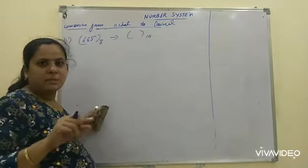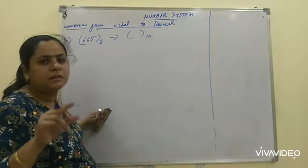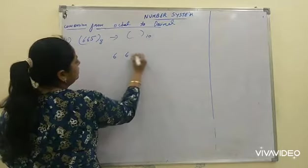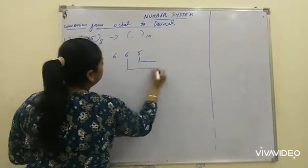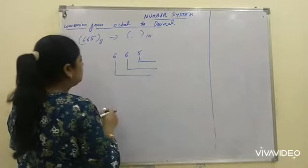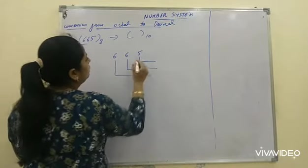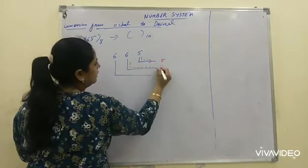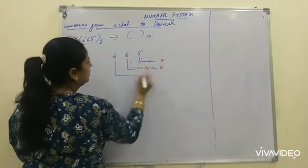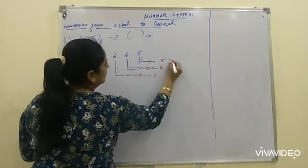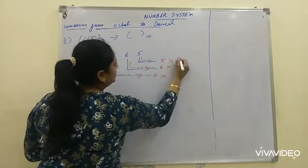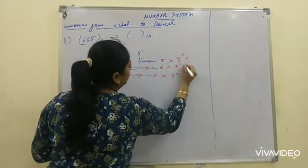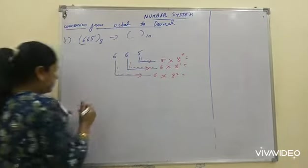Now, octal to decimal that means we will multiply. We will multiply by the base of octal that is 8. So, first we will write 665. We will draw these lines. 5 will travel here and it will come here. Now, 6 will travel and it will come here. This 6 will travel and it will come here. We will multiply each digit by 8 and we will give it power.